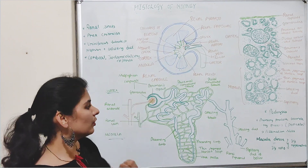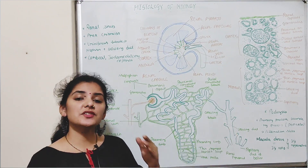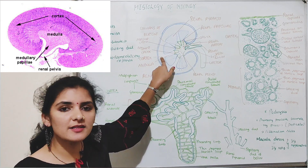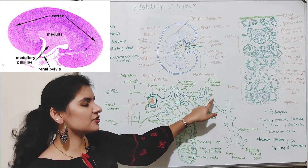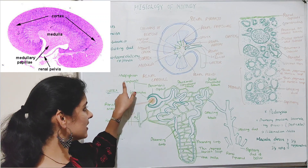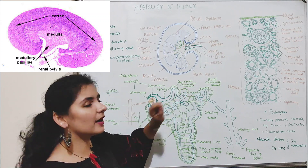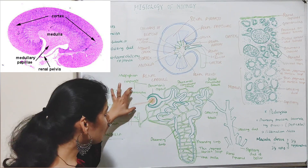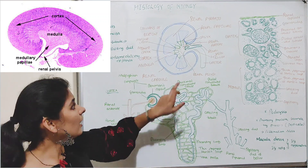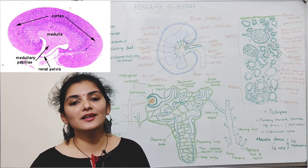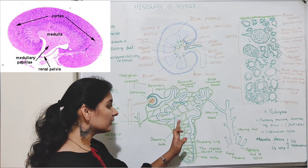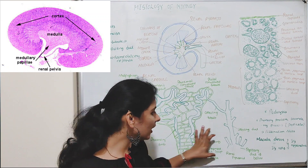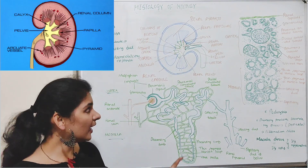Apart from the renal sinuses, the rest of the cortex and medulla consist of nephrons. If you observe a section of the kidney under a microscope, the cortex appears granular. This granular appearance is due to the presence of ovoid structures and coiled structures of the nephron — ovoid structures like Malpighian corpuscles and coiled structures like the convoluted parts. This tells us that the upper part of the nephron is in the cortex. The medulla appears striped due to the vertical regions of the nephron like the loop of Henle and the collecting duct.